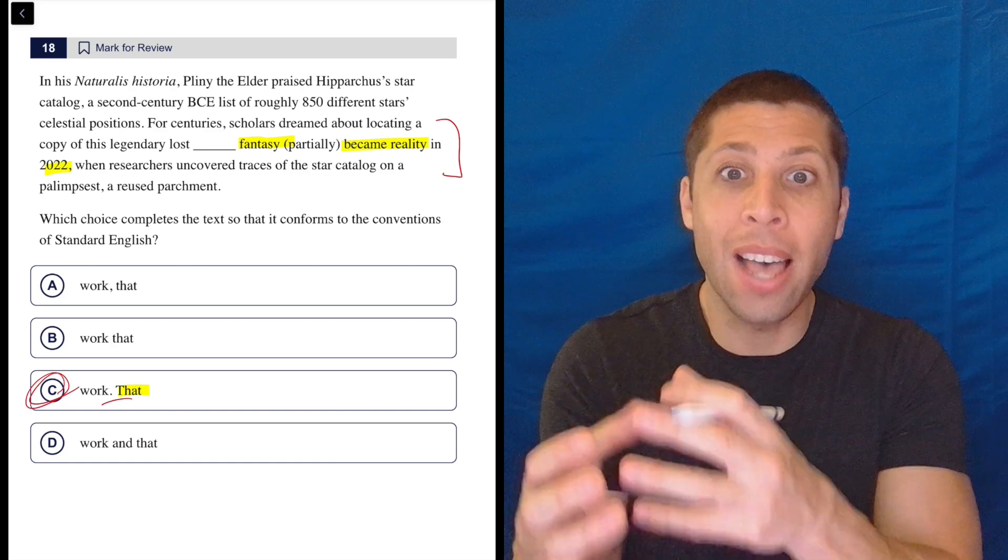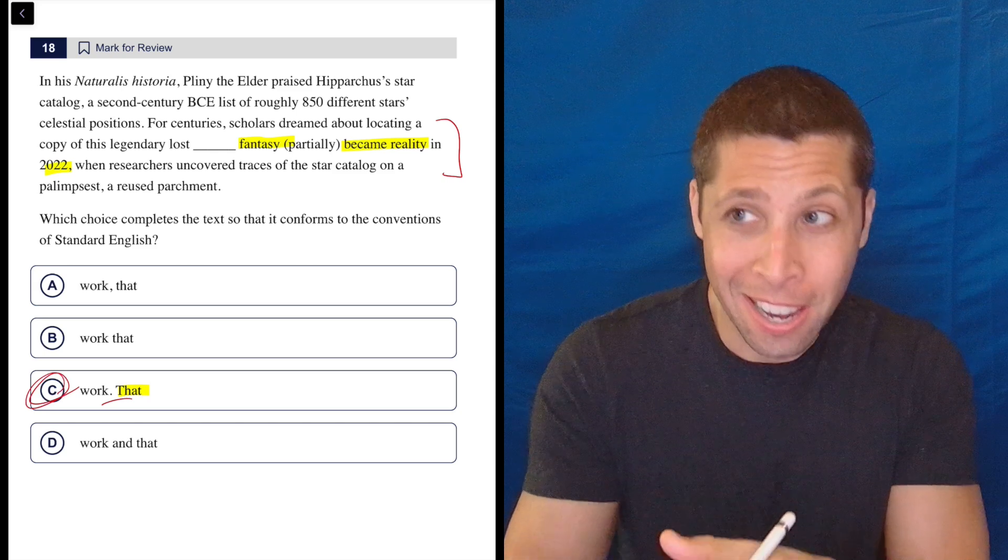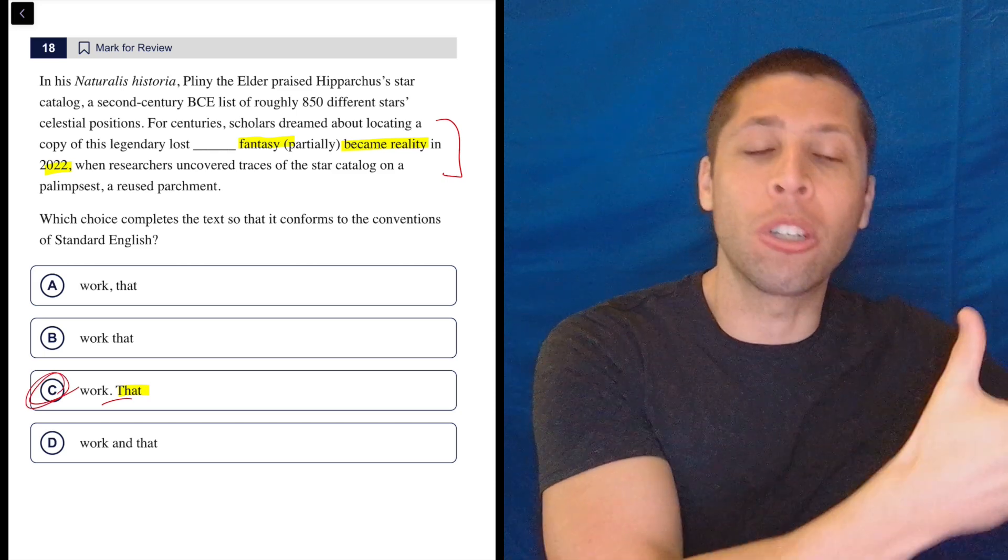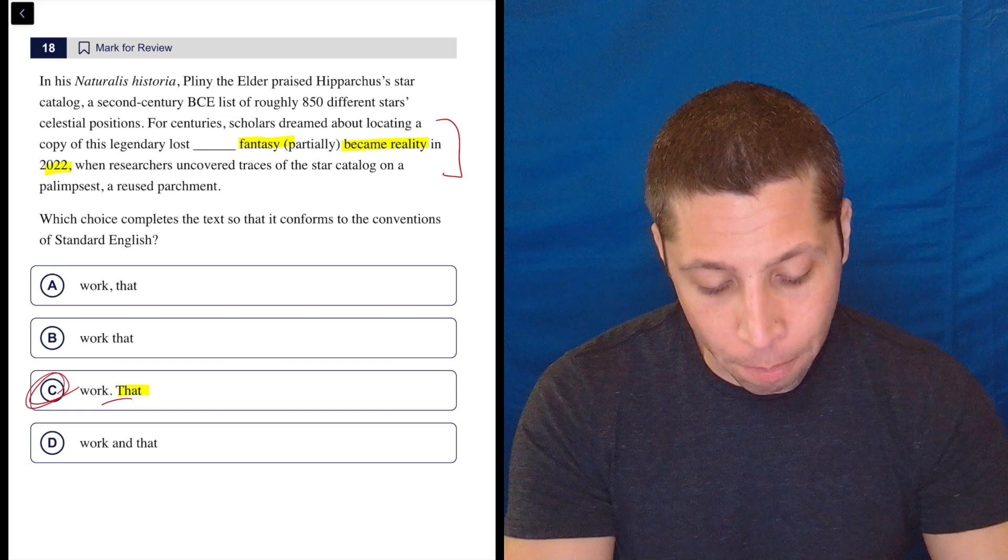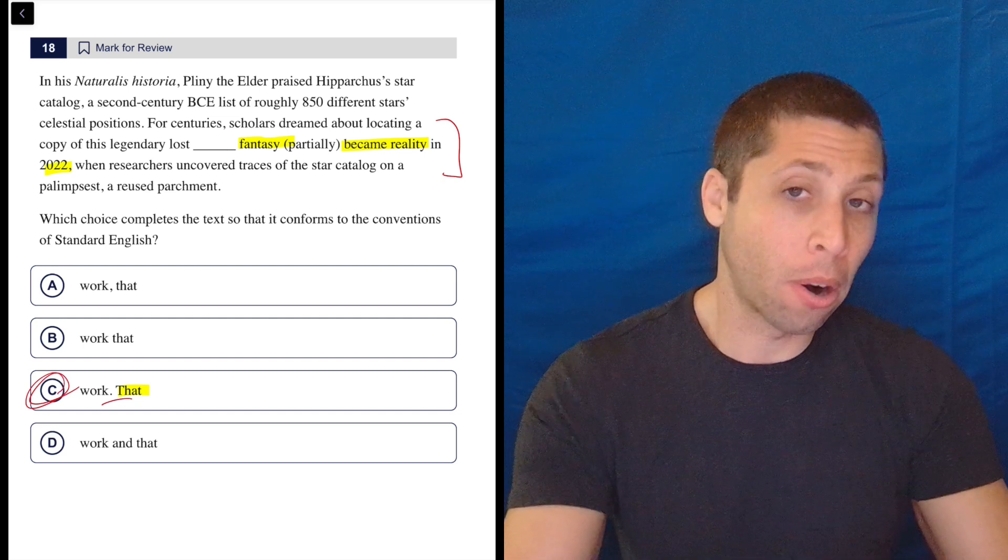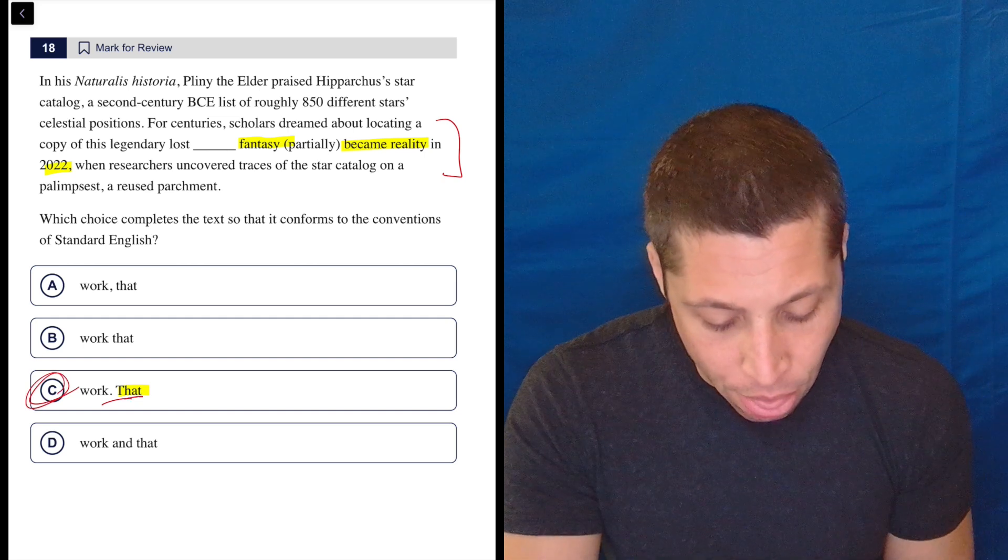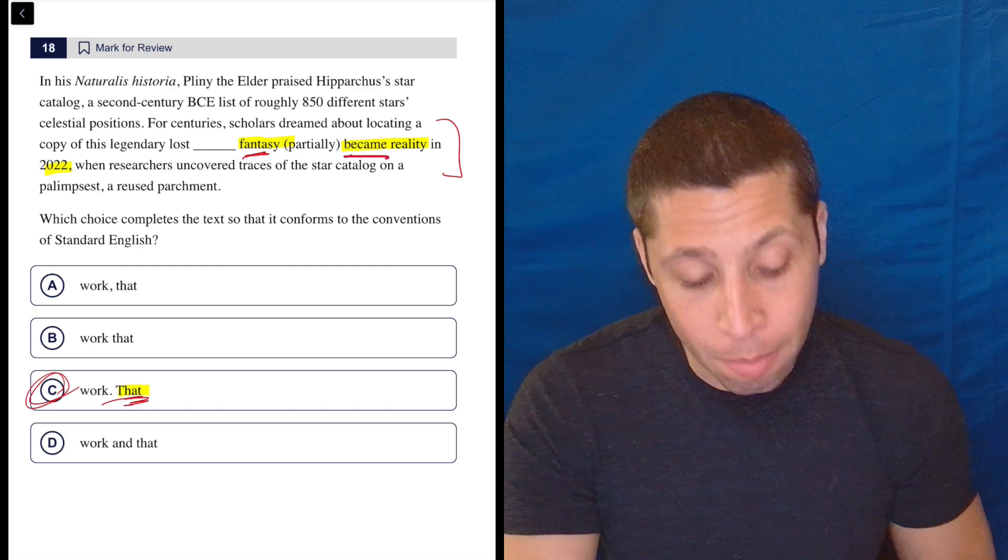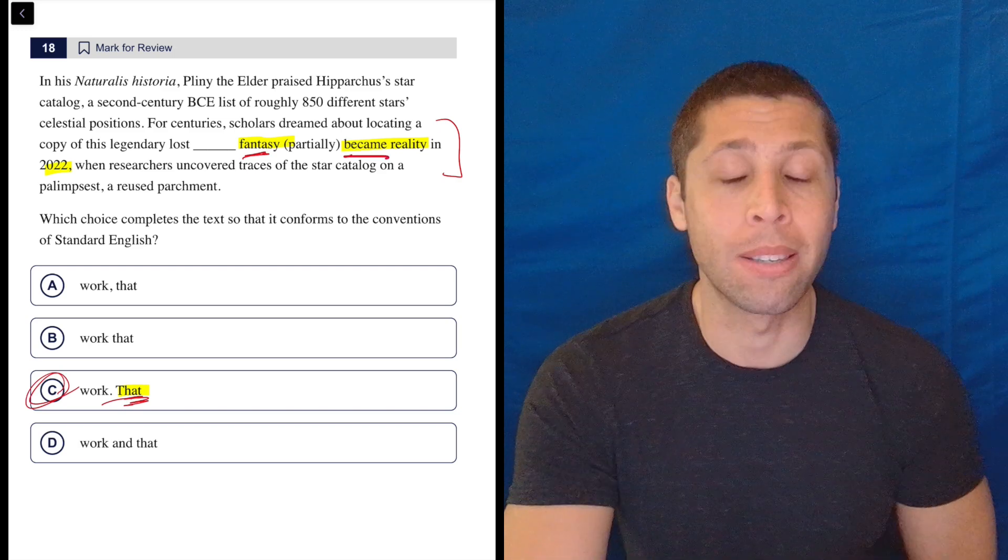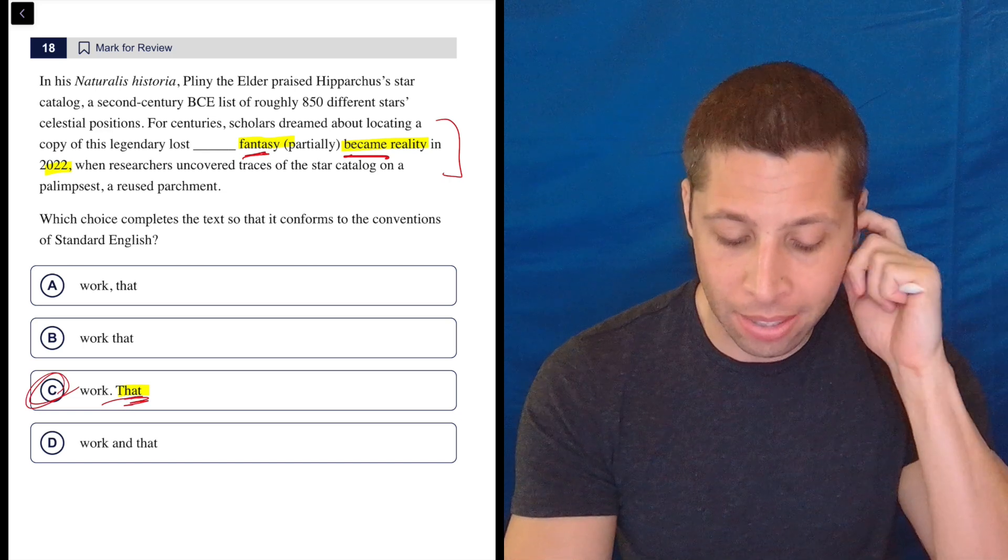There would have been no period there because in that case, the word that is used to continue a description of something. It is not setting it off as a new sentence. And the reason that other part is a sentence is that fantasy is my subject and became is my verb. So we have those two pieces interacting, and that makes it a sentence.